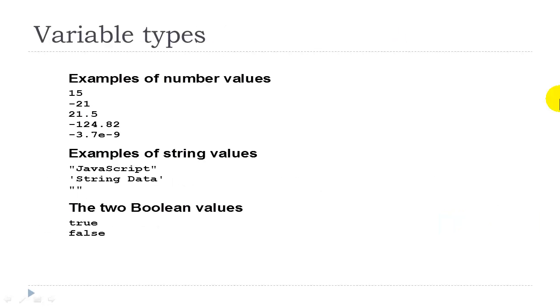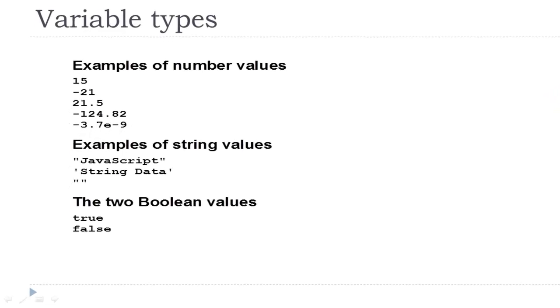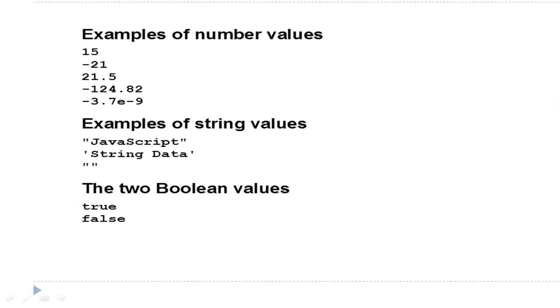In JavaScript, the type of data that is stored in the variable is determined by the way it is used. Variables can contain numeric values, such as a whole number, a decimal, or a negative, or an exponential. They can contain string values, such as a text literal, or an empty character. Or they can contain Boolean type data, which means that the value would return true or false.